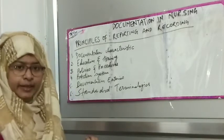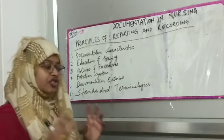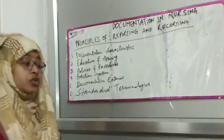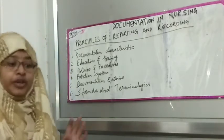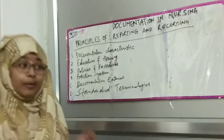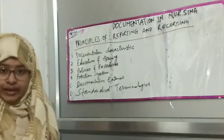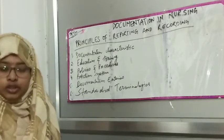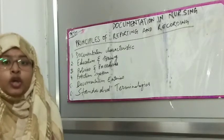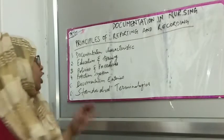For example, when you take the discharge plan, each patient is placed in the discharge plan. When you take the discharge plan, you have to take a consent form. If the patient leaves against medical advice, the hospital will not do reimbursement. So these are policies and procedures.